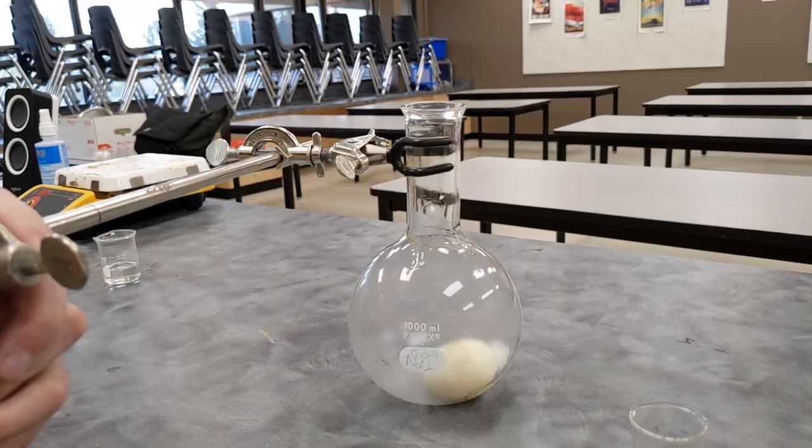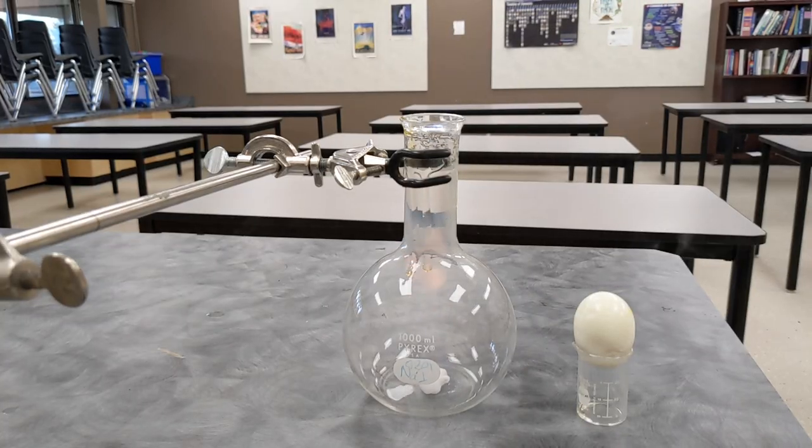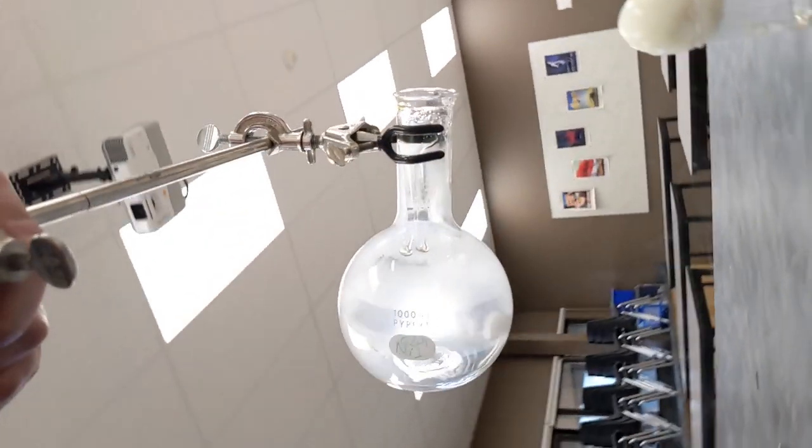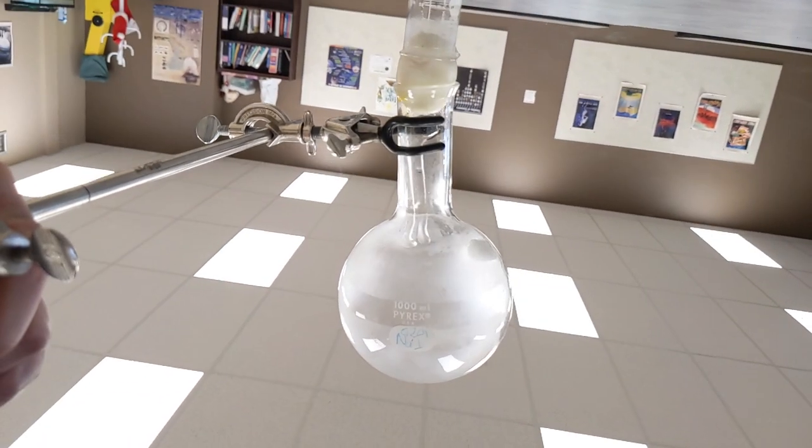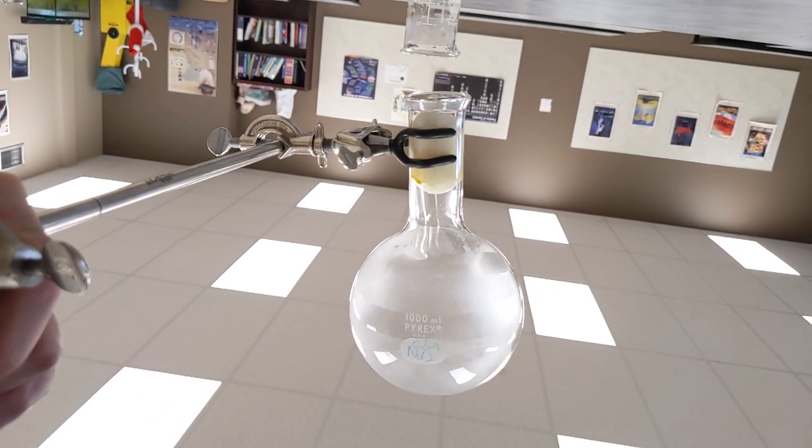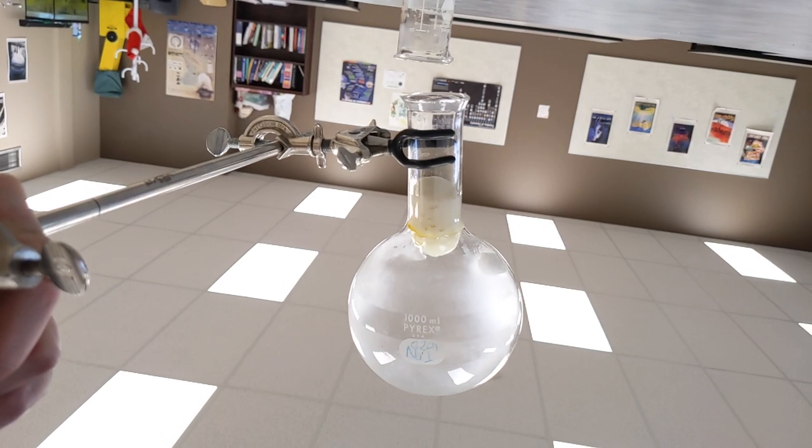Now, can you explain why? Think about what the molecules are doing from the moment that the egg makes a seal around the neck of the flask. And make sure you're thinking not just about the molecules inside the flask, but also the ones outside.